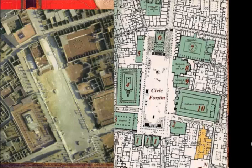Number six is the Capitoline triad temple. What is this triad? It's the three main gods in Roman religion. The first is Jupiter, obviously. The second is Juno, his wife. And the third is Minerva. We will go deeper into those in the religion lesson — that's not what we're going into today. This was the main temple in Pompeii, and as you can see, it's in the centre.